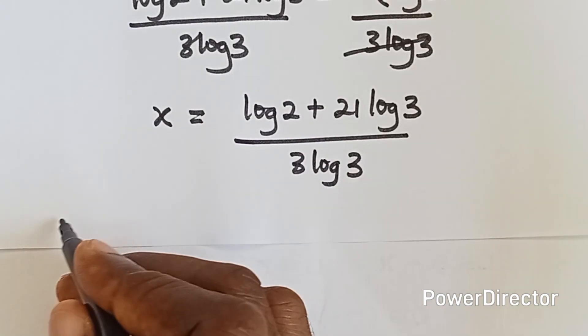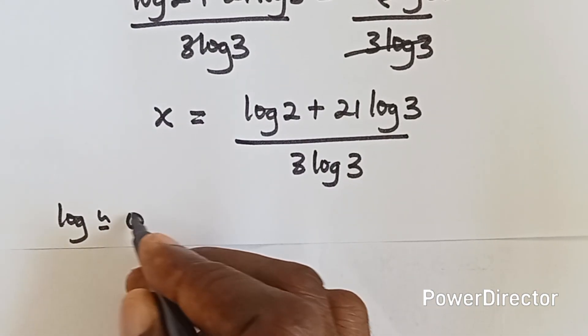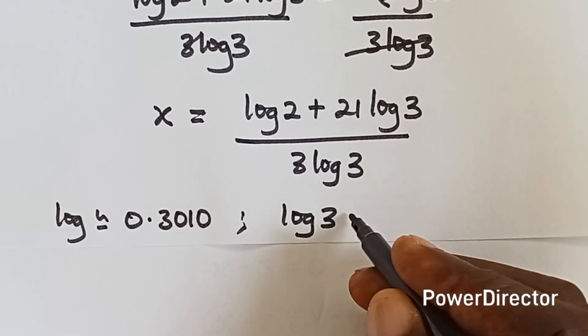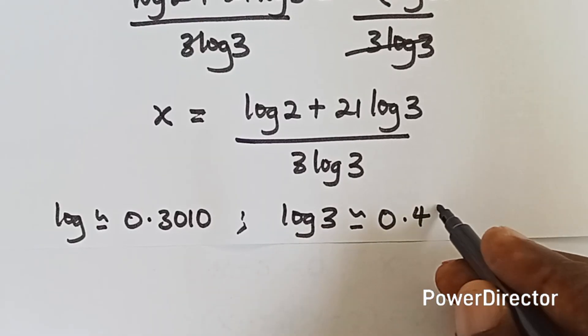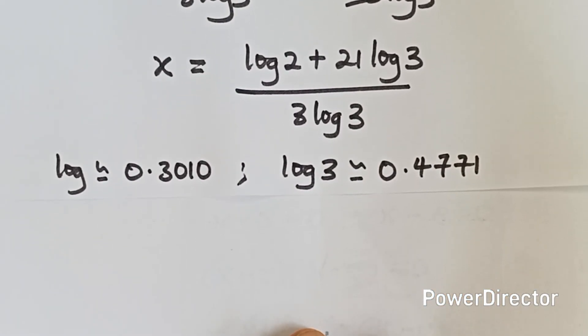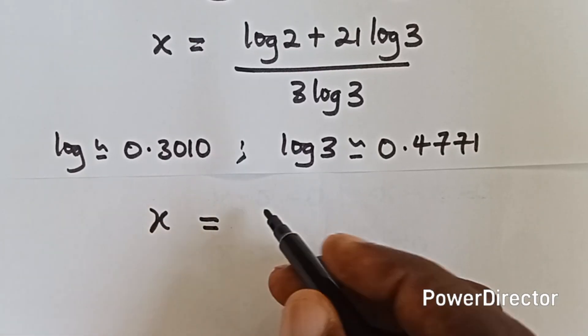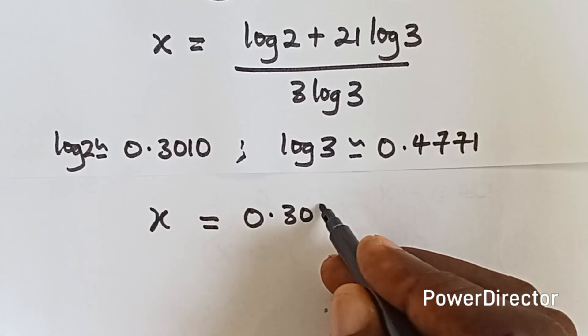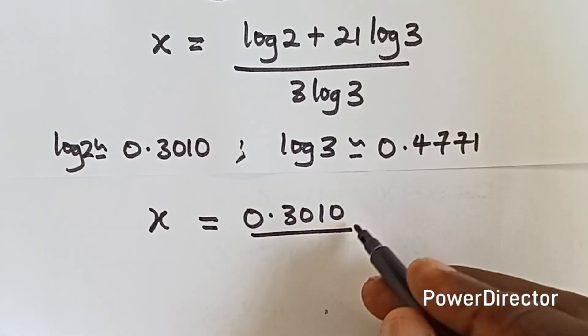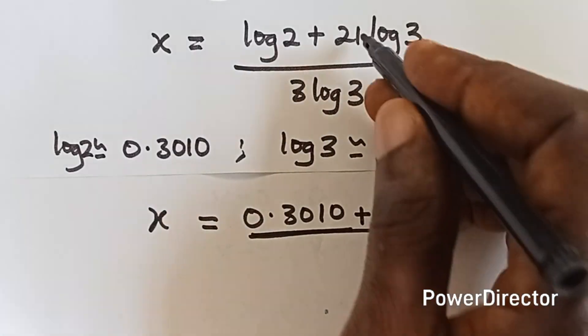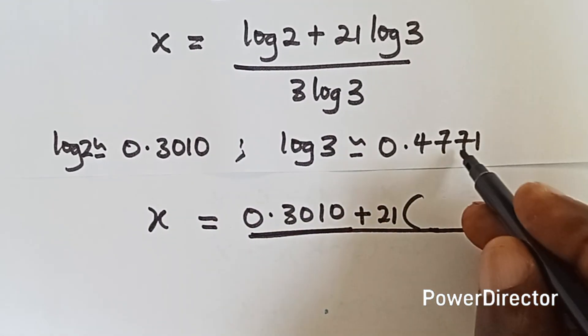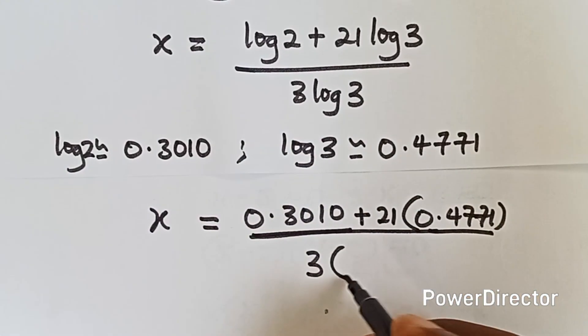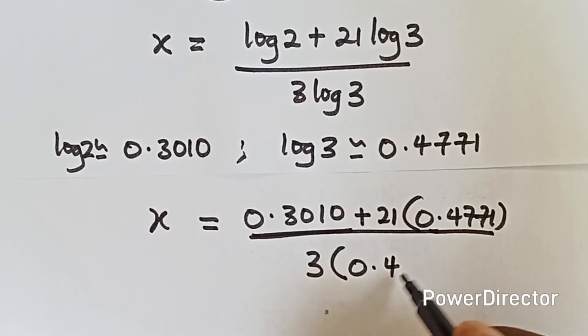Now what is log 2? Log 2 is approximately 0.3010. And what is log 3? Log 3 is approximately 0.4771. Okay, we're going to apply that now. So we have x equals to log 2. Okay, plus 21 multiplying log 3. This log 3 is 0.4771 over 3 multiplying log 3 which is 0.4771.